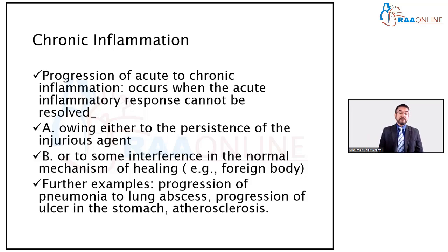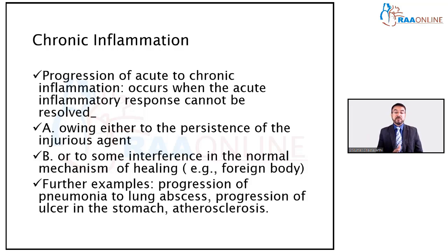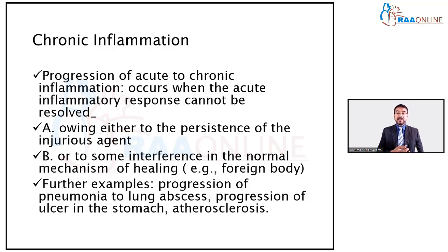Even suture material can act as a foreign body interfering with healing. Any condition where a very strong, resistant bacterium or a foreign body persists leads to chronic inflammation, resulting in a very severe type of inflammation. Other examples include pneumonia progressing to a lung abscess, or a gastric ulcer — which starts off as gastritis, erodes deeper, and becomes a chronic inflammation.